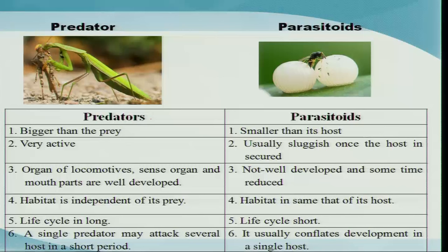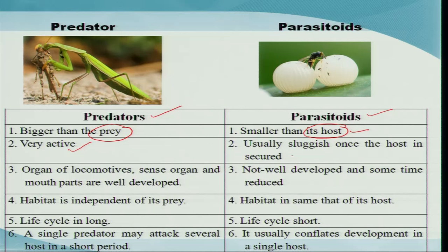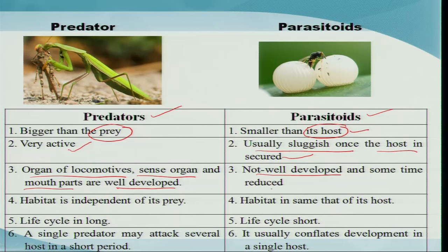Another important aspect is the difference between a parasitoid and a predator. In case of predators they are bigger than their prey, whereas parasitoids are smaller than their host. The organism on which the parasitoid takes shelter is called the host. Predators are very active because they must actively seek, kill, and feed on prey. Parasitoids are initially active but once they start colonizing the host they become sluggish and begin feeding. In predators the locomotory organs, sense organs, and mouthparts are well developed, whereas in parasitoids they are not, because they take shelter inside or outside the host's body.